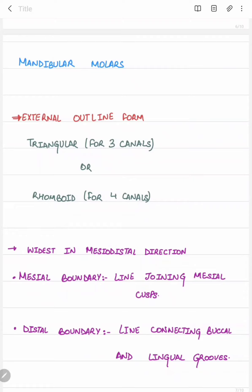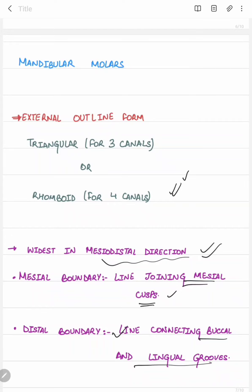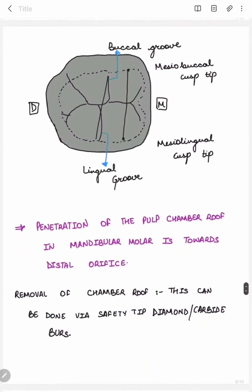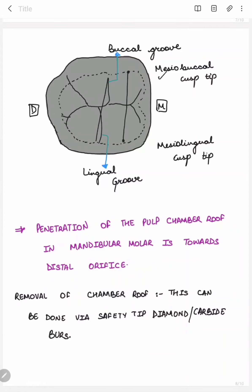In mandibular molars, the external outline form is also triangular if three canals are present, or rhomboid if four canals are present. It is widest in the mesiodistal direction — unlike maxillary molars where it was widest in the buccolingual direction. The mesial boundary is the line joining the mesial cusps, and in this picture you can see the mesial boundary is the line joining the mesiobuccal and mesiolingual cusp tips.